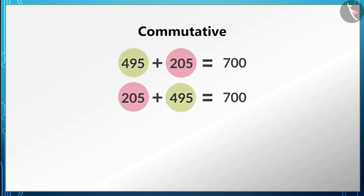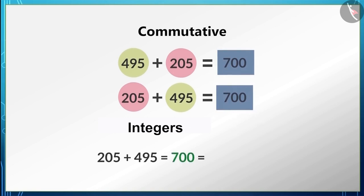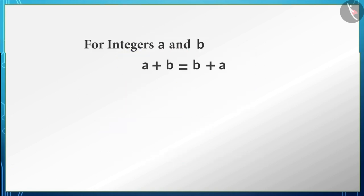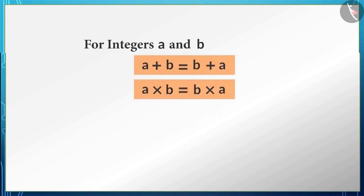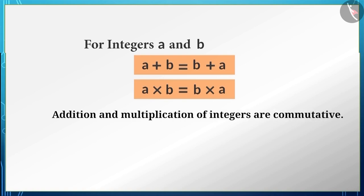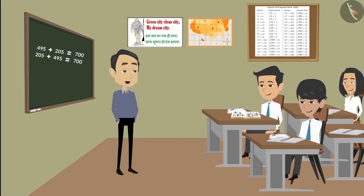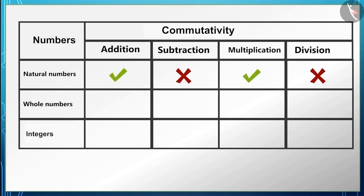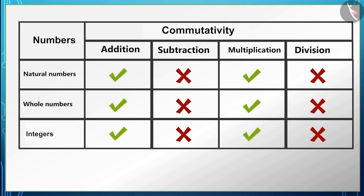If we add these two integers in any order, their sum does not change. Similarly, if we add or multiply any two integers a and b in any order, there is no change in the answer, because the addition and multiplication of integers are commutative. In the last class we learned about the commutative property of natural numbers, whole numbers, and integers.